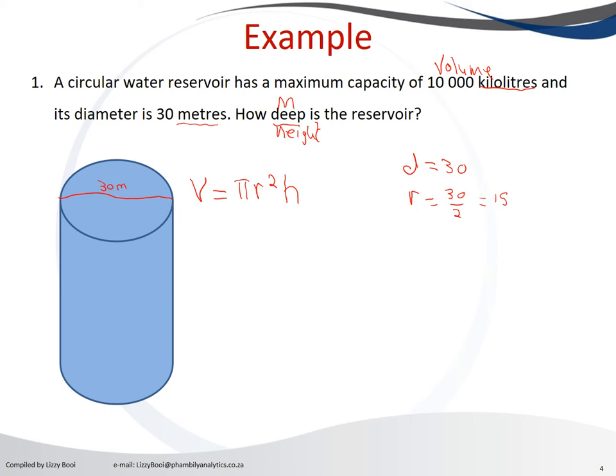Our volume is 10,000 kiloliters. We know from previous that 1 kiloliter is equivalent to 1 meter cubed. Therefore it means our 10,000 kiloliters are equivalent to 10,000 meter cube.